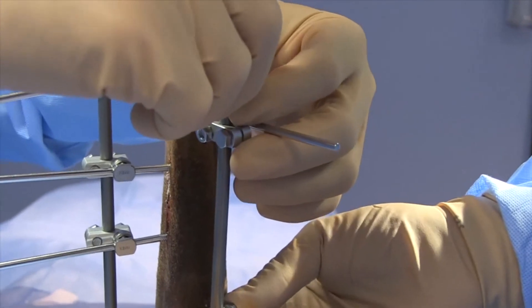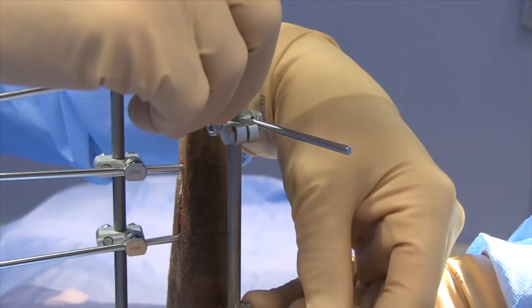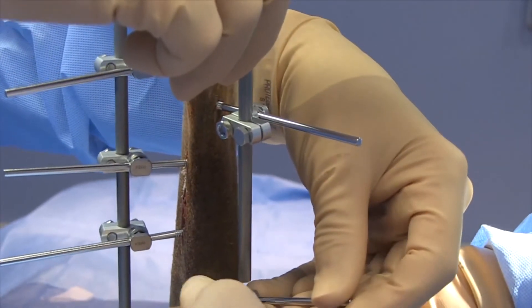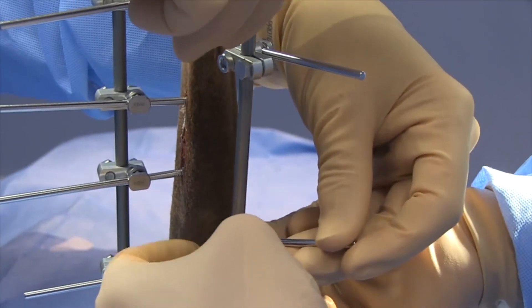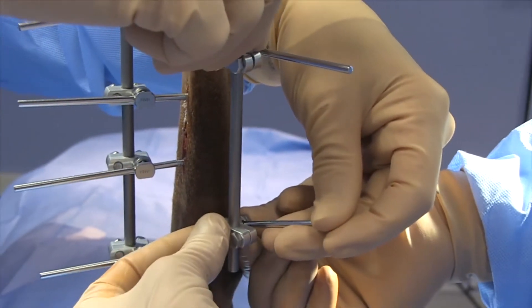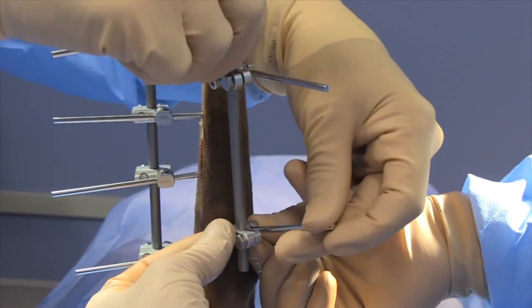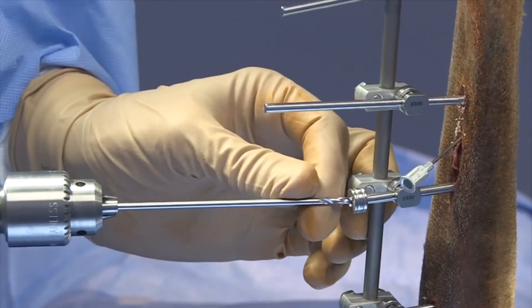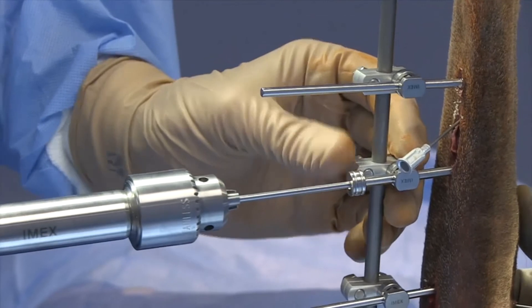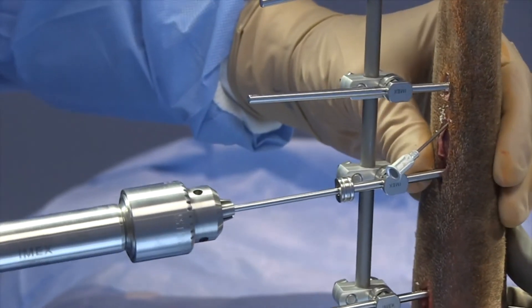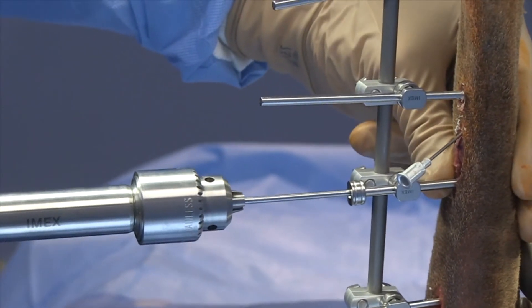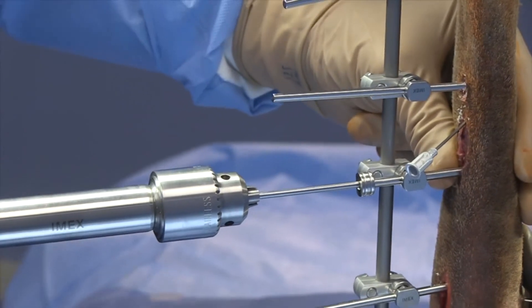The secondary bolt is designed to free the surgeon's hands and simplify frame application. In addition to providing symmetrical tightening of the SK clamp, the secondary bolt also enables an empty clamp to serve as a targeting device. This design eliminates the need for expensive aiming devices and pin placement instrumentation.